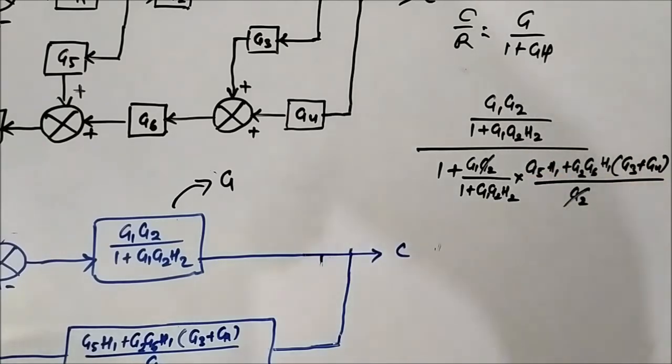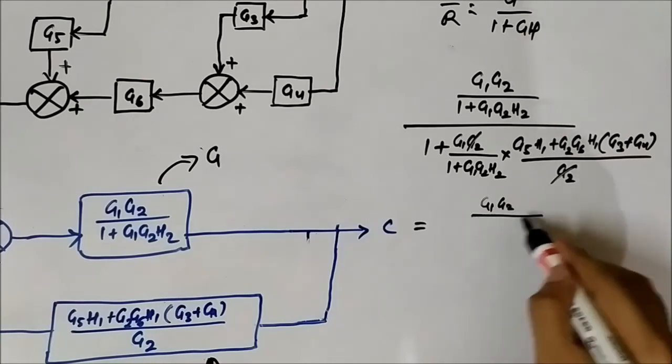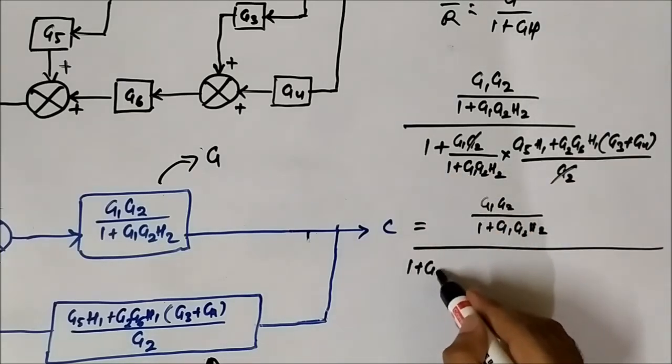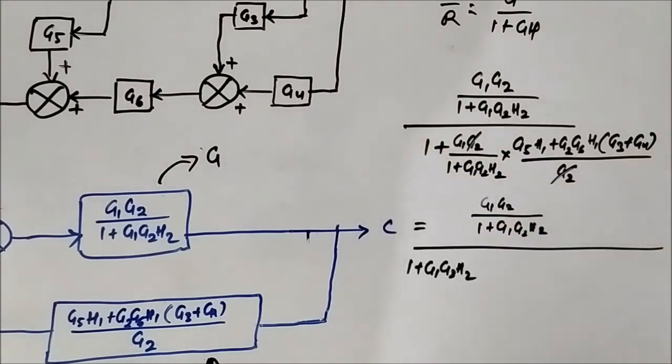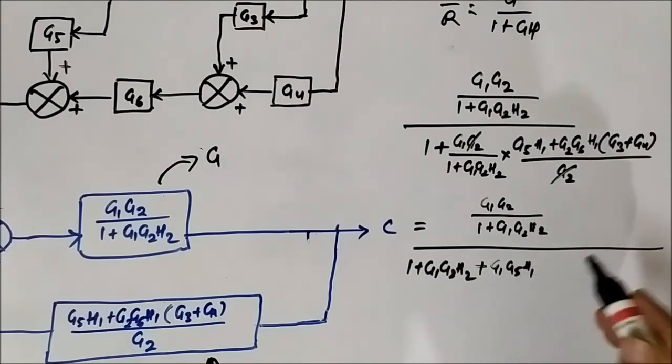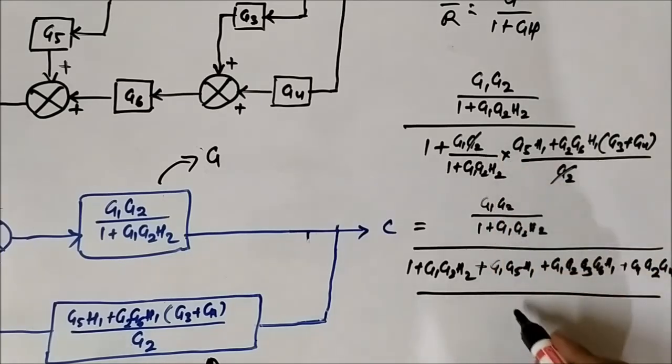Here, G2 G2 will get cancelled out. Then it will become G1 G2 by 1 plus G1 G2 H2, divided by 1 plus G1 G2 H2. This term goes here, the numerator 1 plus G1 getting multiplied with each of these terms: G1 G5 H1 plus G1 G2 G3 G6 H1 plus G1 G4 G6 H1, by 1 plus G1 G2 H2.